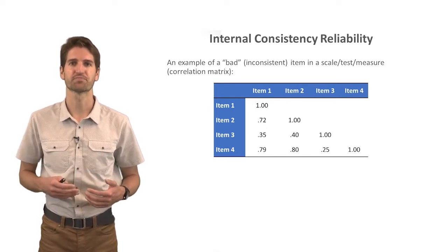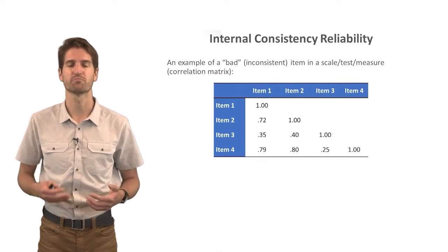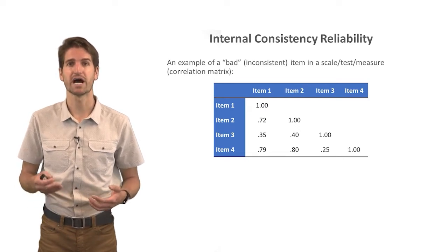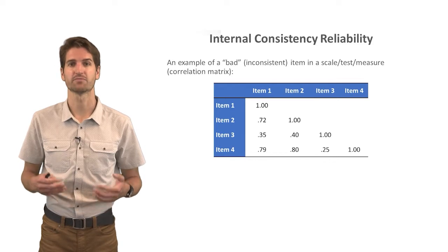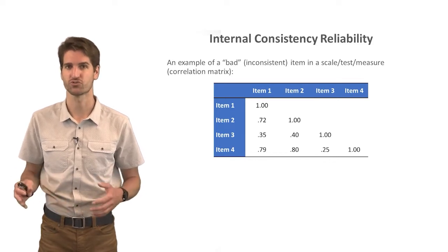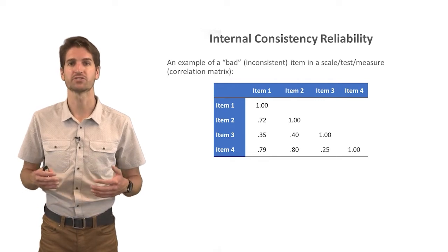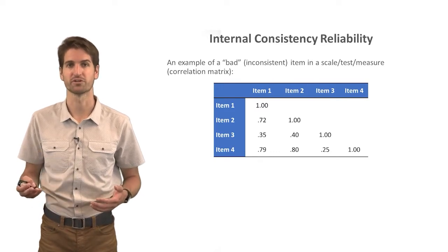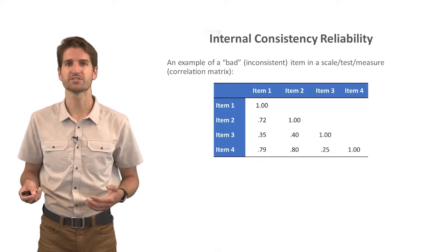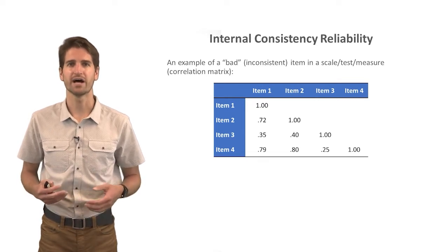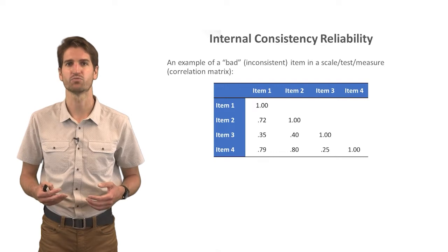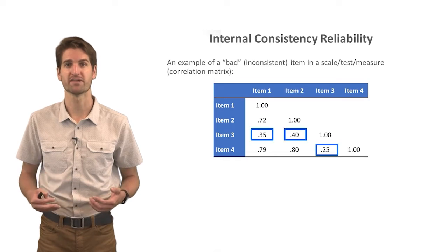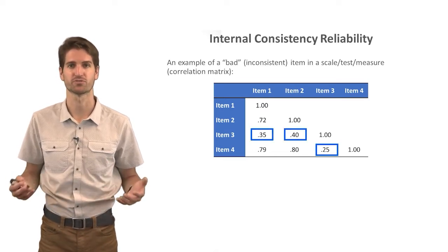Here you can see that item one is correlated with item two at 0.72 — a pretty strong correlation, especially for survey items. Item one is correlated with item three at 0.35, which is not so strong. And item one is correlated with item four at 0.79, much more strongly related. What you'll notice is that there's something about item three: it doesn't seem to be very highly correlated with item one, item two, or item four — with values of 0.35, 0.40, and 0.25 respectively.